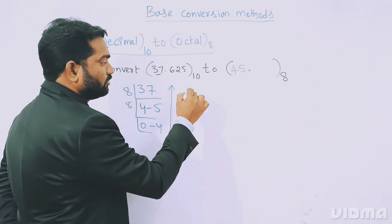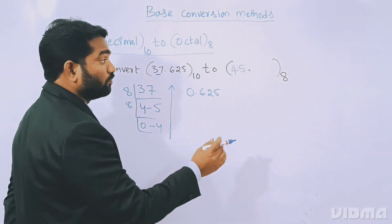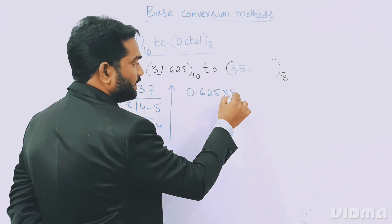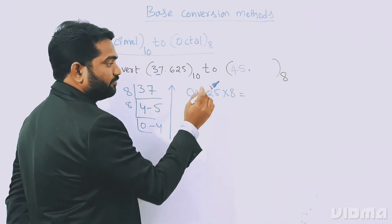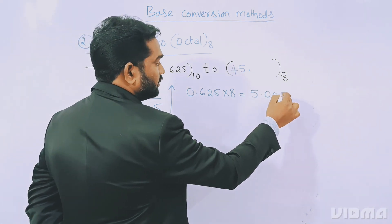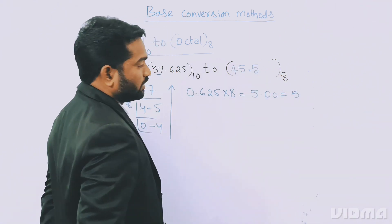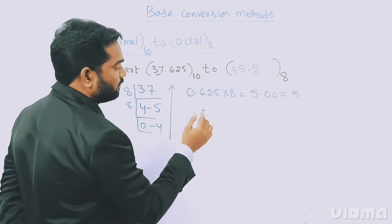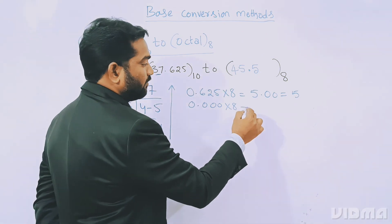Now for the fractional part: 0.625 is the fractional value. We multiply by the base, which is 8. So 0.625 × 8 = 5.00. The integer part of the result is 5, and the remaining fractional part is 0.00.